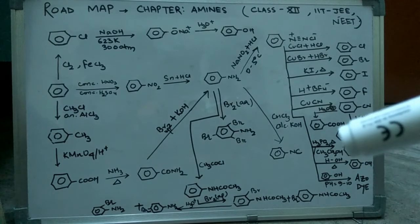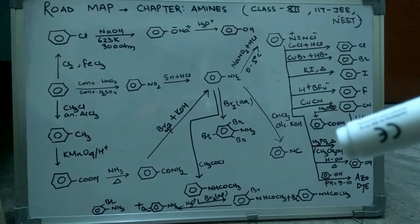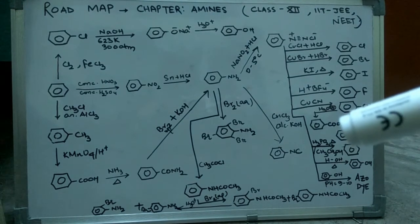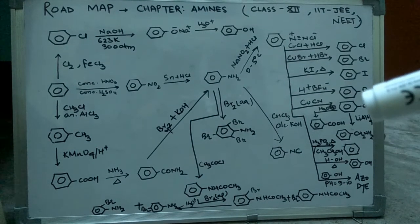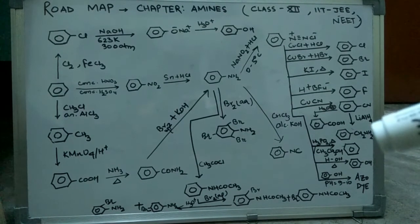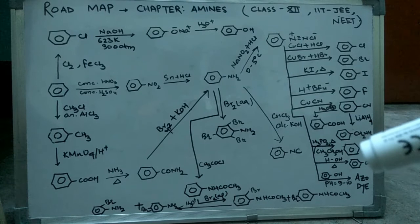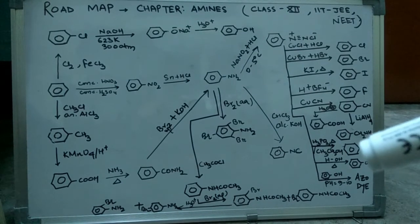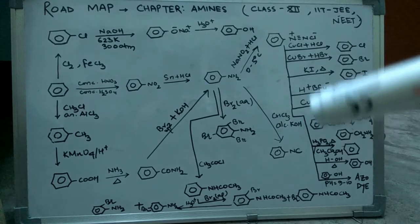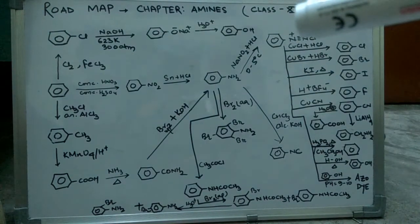The CN group can be hydrolyzed to give us the COOH group linked to benzene. We can also reduce it using LiAlH4, giving us CH2NH2 as the group linked to benzene.